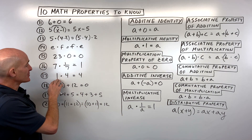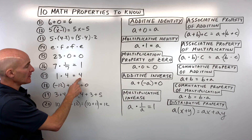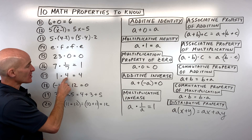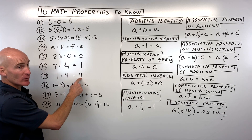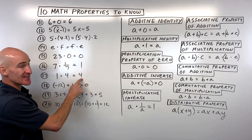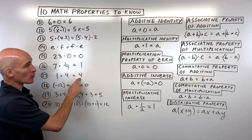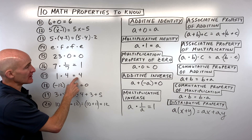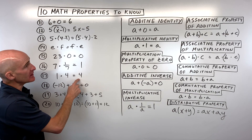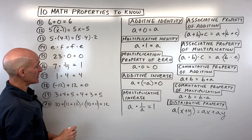For number 17: one times four equals four. We started with four and ended with four — anything times one is itself. We're getting an identical quantity back, so this is the multiplicative identity.